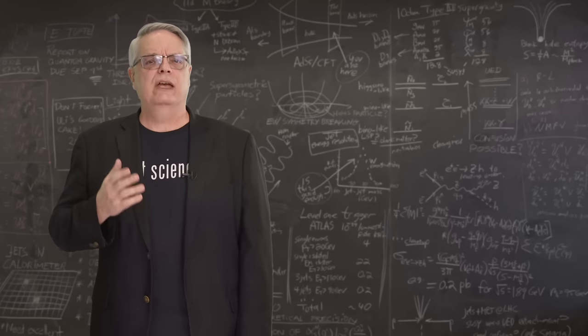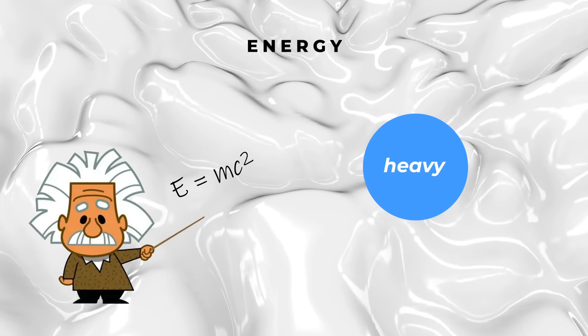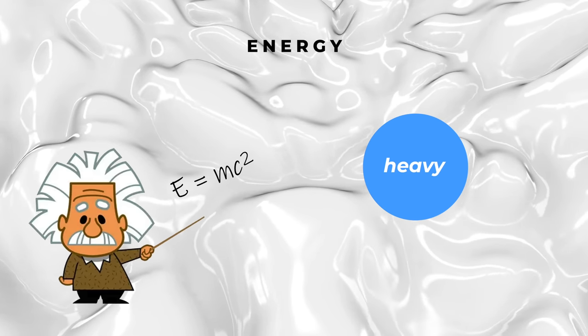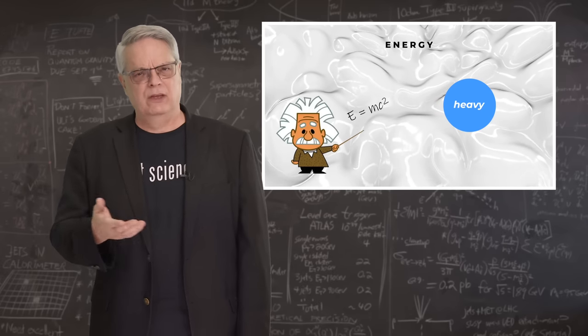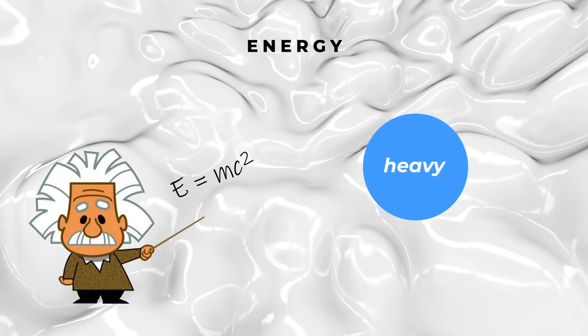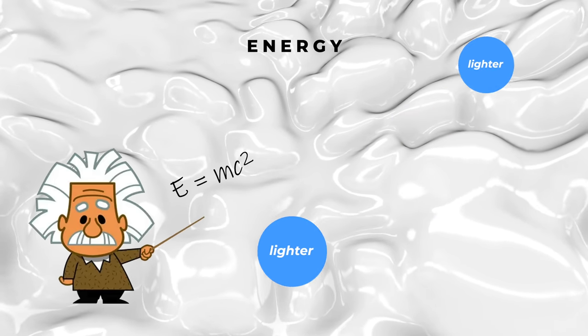Conservation of energy has a number of implications, but the key one is tied to Einstein's equation, E equals mc squared, which says that energy and mass are basically the same. For particle decay, energy conservation just implies that particles can only decay into lighter particles.